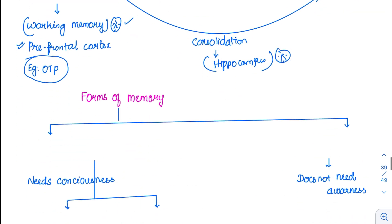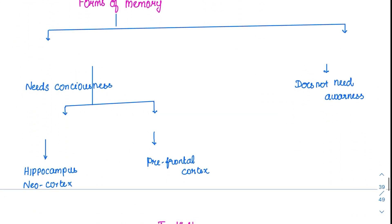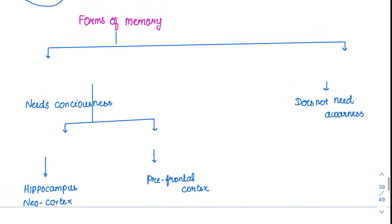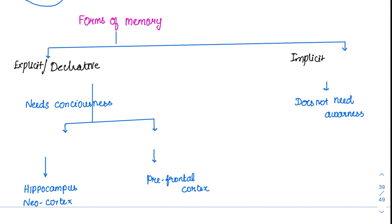Coming to the forms of memory. We have discussed memory classification based on duration. Now there are two different classifications based on the forms of memory. One is called explicit memory, also called declarative memory, and there is another thing called implicit memory.